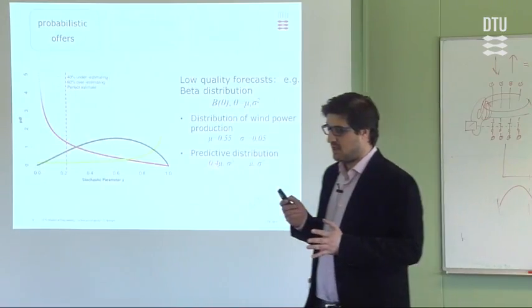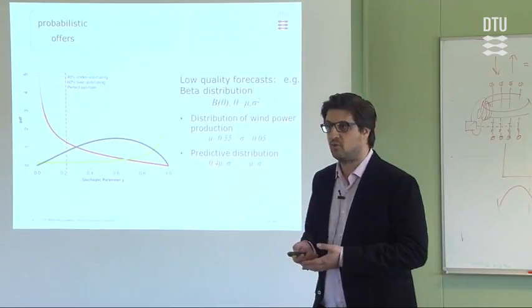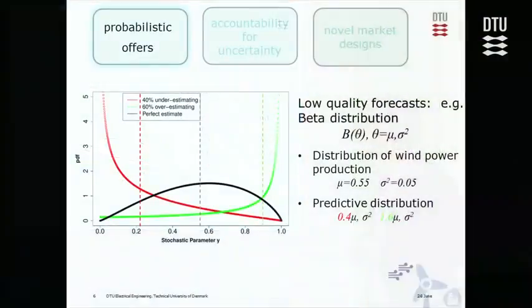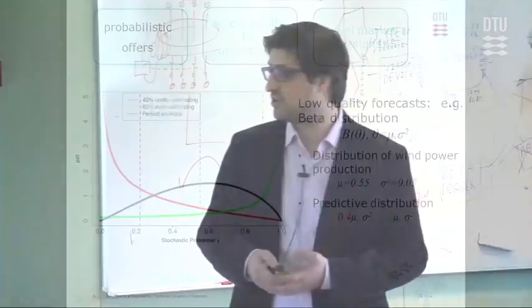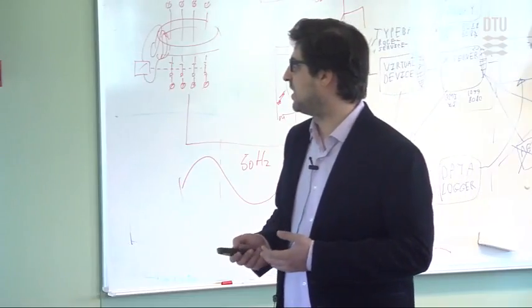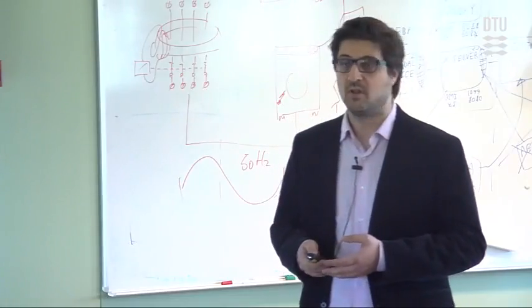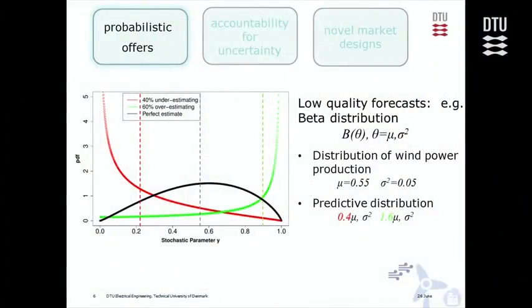However, the problem of what to do with probabilistic offers remains because we may acquire offers of low quality. This is a specific example we've been using in this research. Assume we have a beta distribution defining wind power production for one producer, given by the black line here.